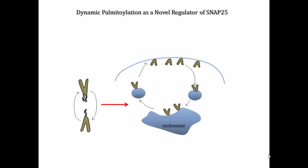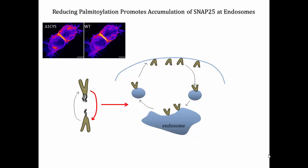Palmitoylation targets SNAP25 to a dynamic cycling pathway that shuttles the protein between the plasma membrane and endosomes. Entry of SNAP25 into this cycling pathway is essential to allow the protein to function in membrane fusion pathways at both of these compartments. Furthermore, the flux of SNAP25 through this pathway is controlled by the level of SNAP25 palmitoylation.